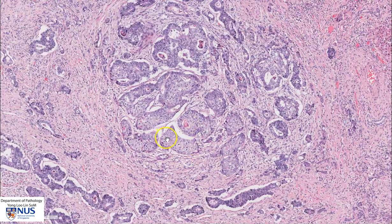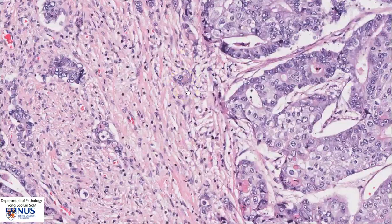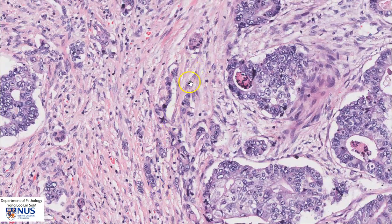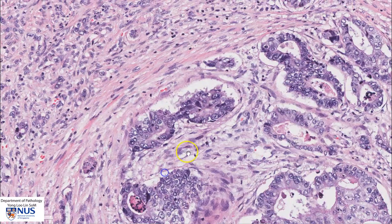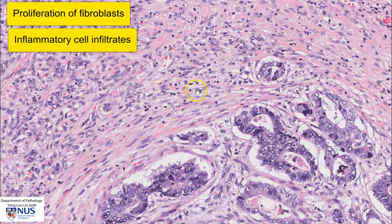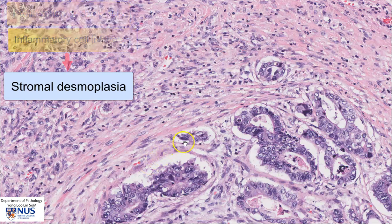In addition to these malignant glands, the stroma around them is also abnormal. This stroma is composed of collagen as well as fibroblasts — spindle cells with elongated nuclei. The stroma around invasive cancer often has this very cellular appearance with proliferation of fibroblasts, and also infiltration with inflammatory cells such as lymphocytes. This stromal reaction is known as stromal desmoplasia.